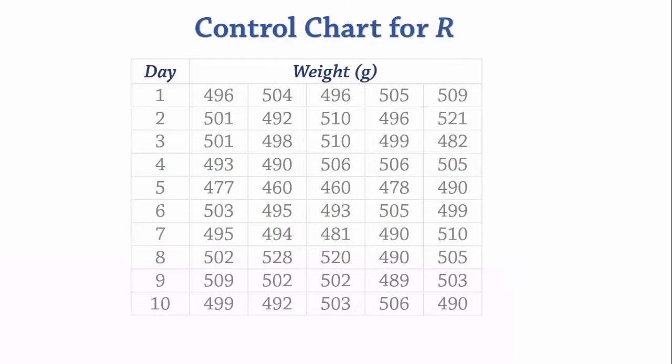Therefore, the range for the first sample is 509 minus 496 which gives 13. For the second sample, the range is 521 minus 492 which gives 29. Continuing in that fashion, we have the ranges for all samples.